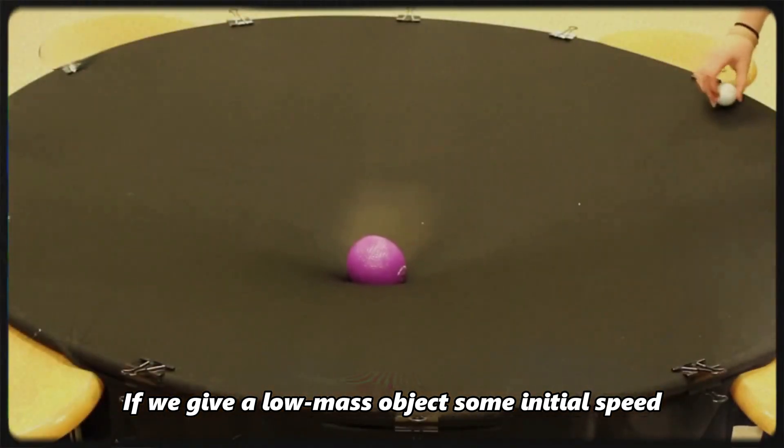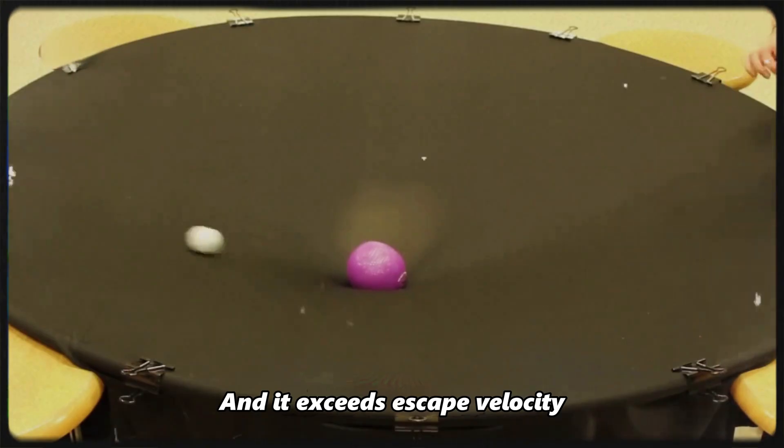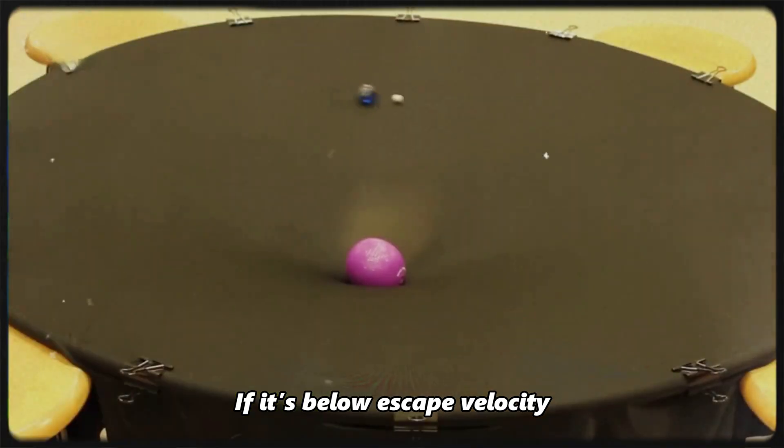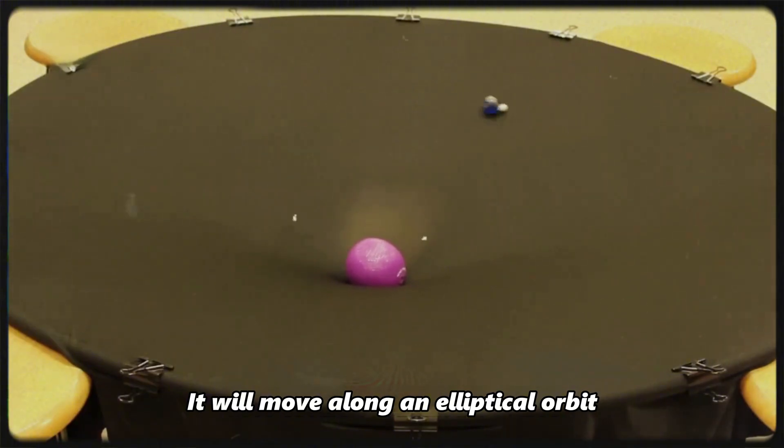If we give a low mass object some initial speed and it exceeds escape velocity, it will follow an unbound trajectory. If it's below escape velocity, it will move along an elliptical orbit.